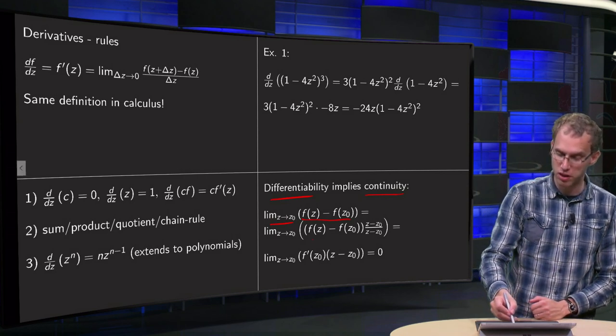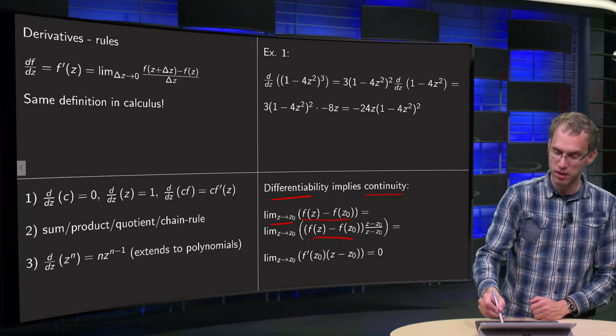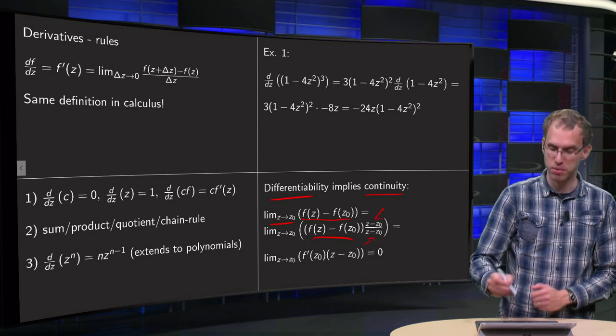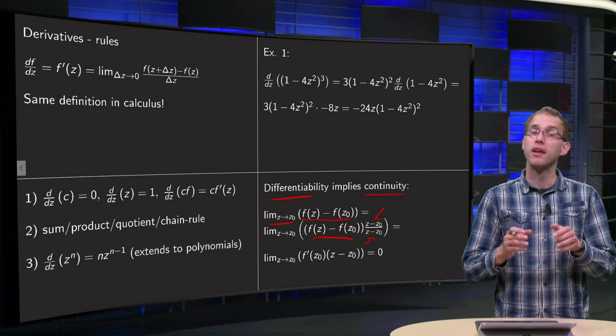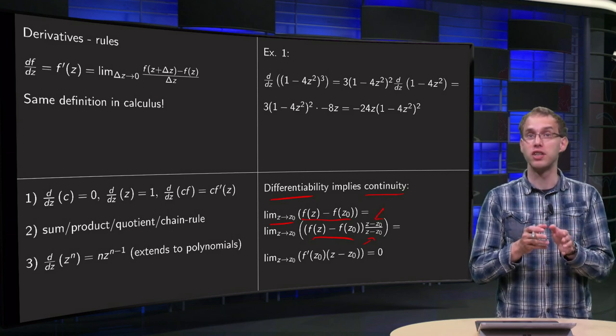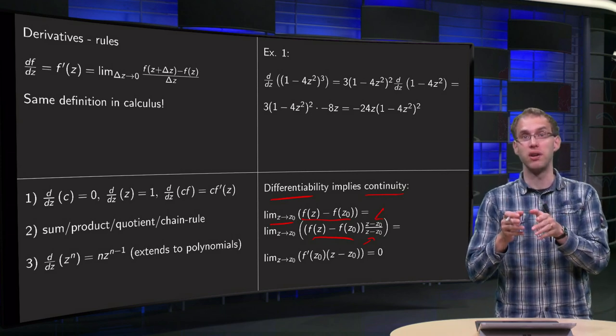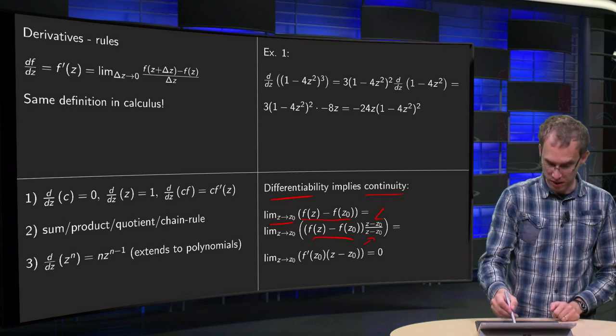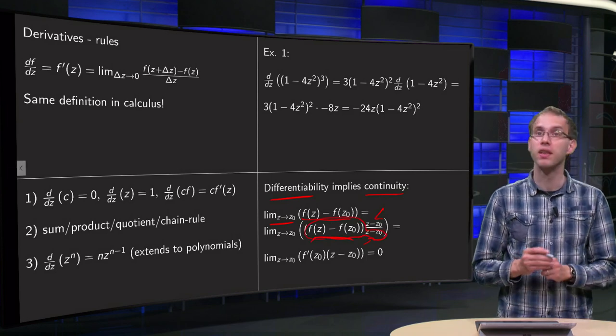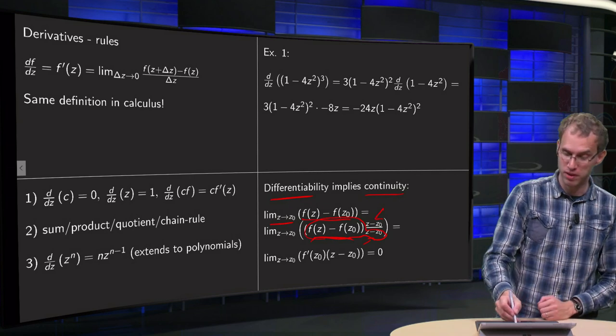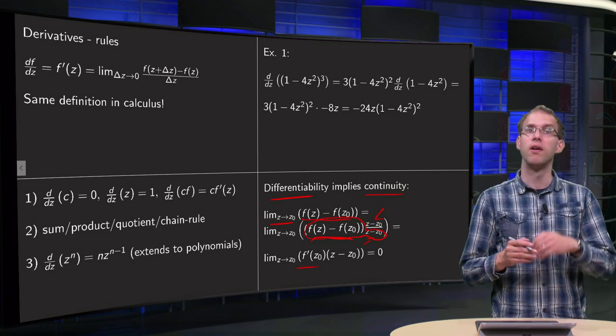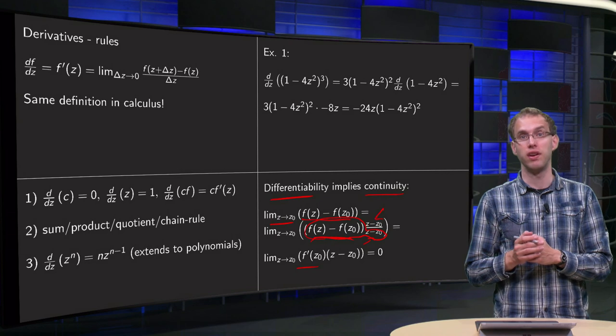So now we have lim(z→z₀) [f(z)-f(z₀)]/(z-z₀) over here, and that's just your f'(z₀) times (z-z₀). Now, we assume that the derivative exists, we assume that f is differentiable.